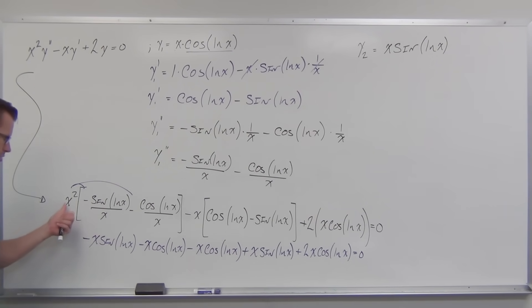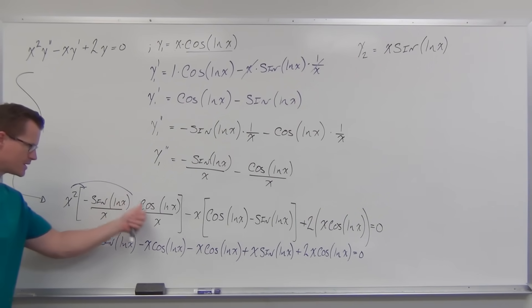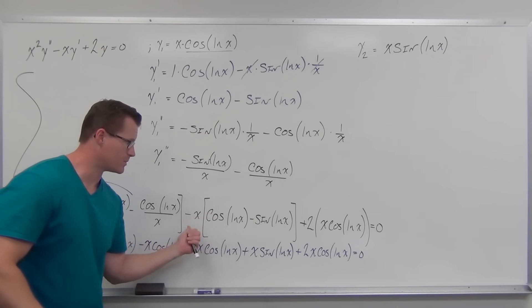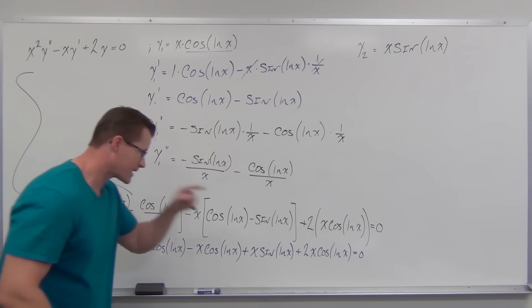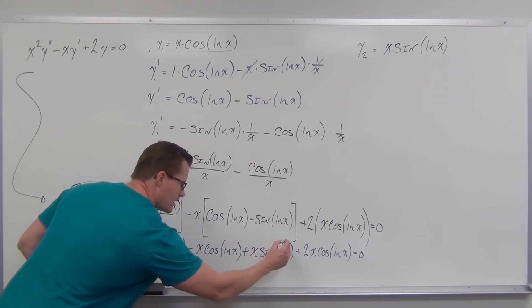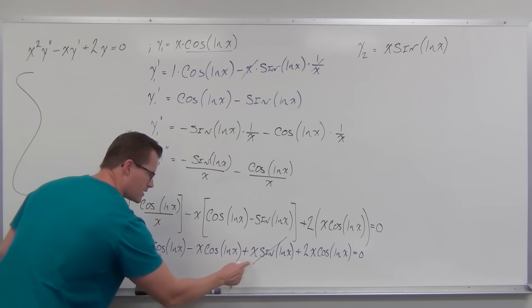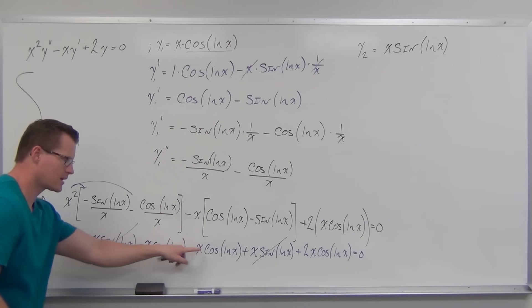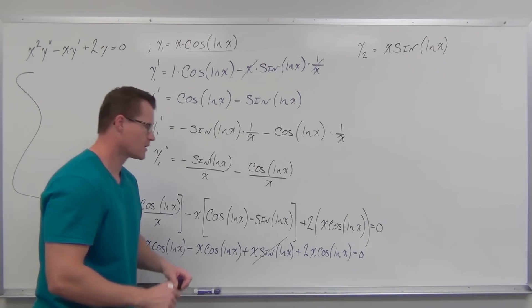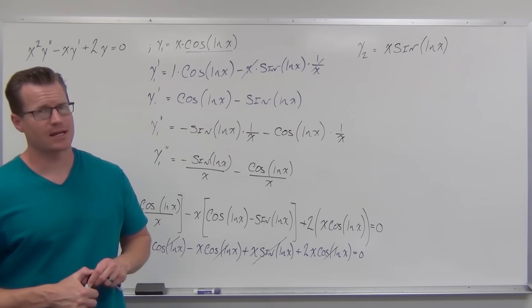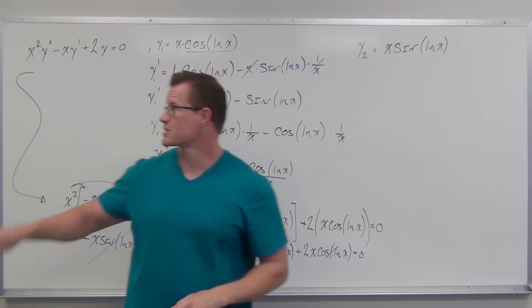Let's check the signs. Distributing the second derivative term: I distribute, I get rid of one x, but I have a minus. Distributing the next term: again minus. Distributing the cosine term gives a plus. So watching minus, minus, plus, and then plus 2x·cosine ln x from the original function. Looking at everything: the x·sine ln x terms — there's a plus and a minus, so that's gone. The x·cosine terms: minus 1, minus 2, gives minus 2x·cosine ln x, plus 2x·cosine ln x. All of these are gone. We get 0 equals 0, and that satisfies that this is in fact a solution to our second-order differential equation.